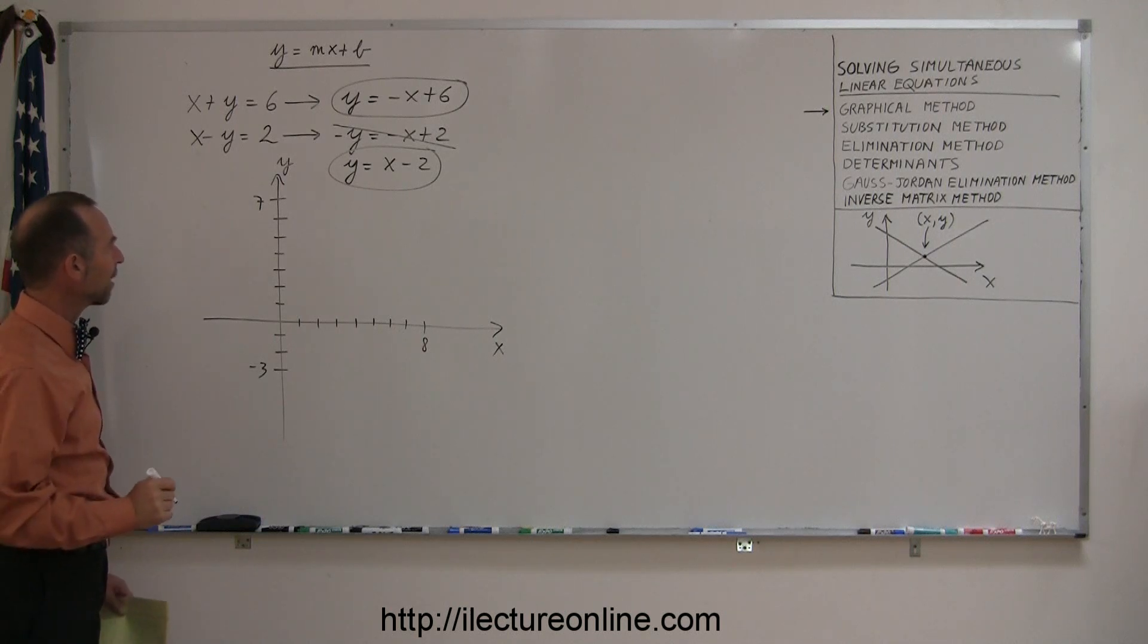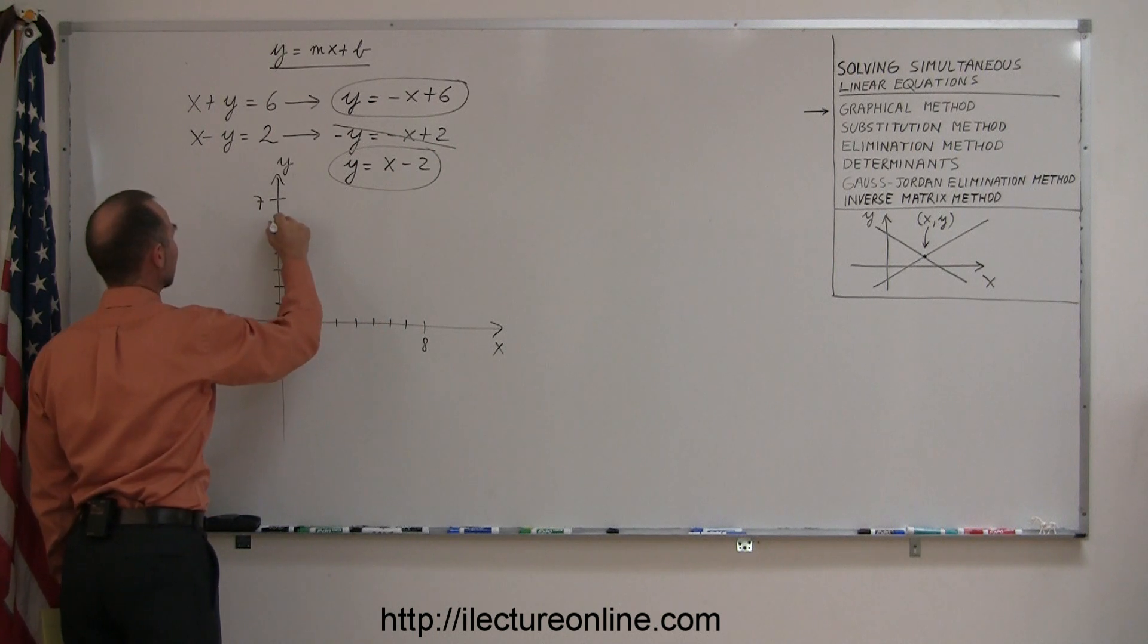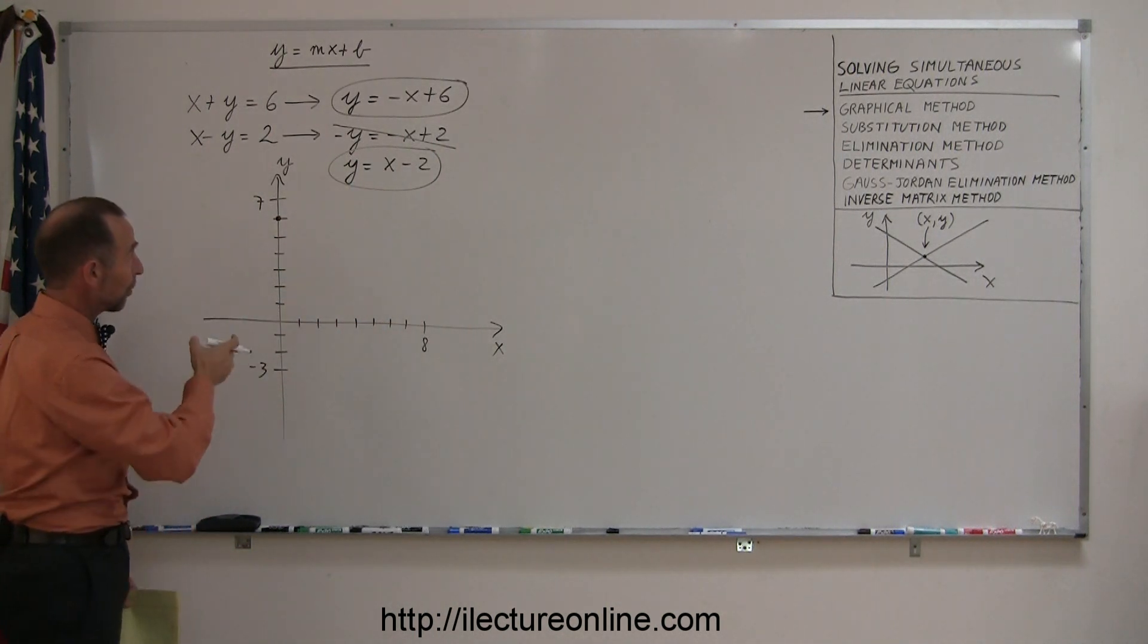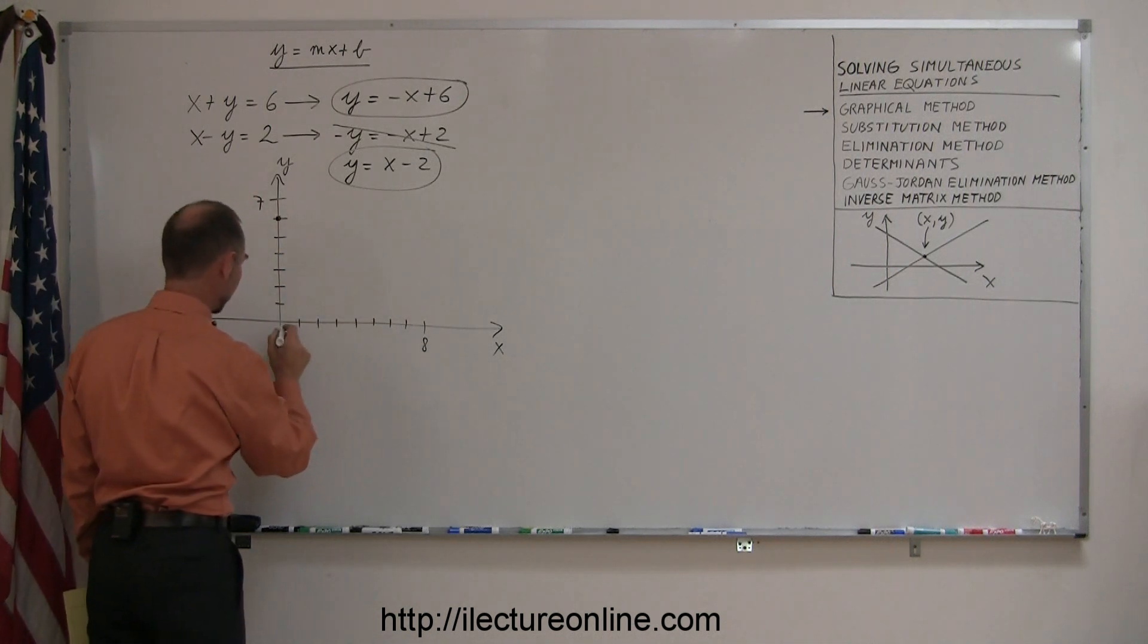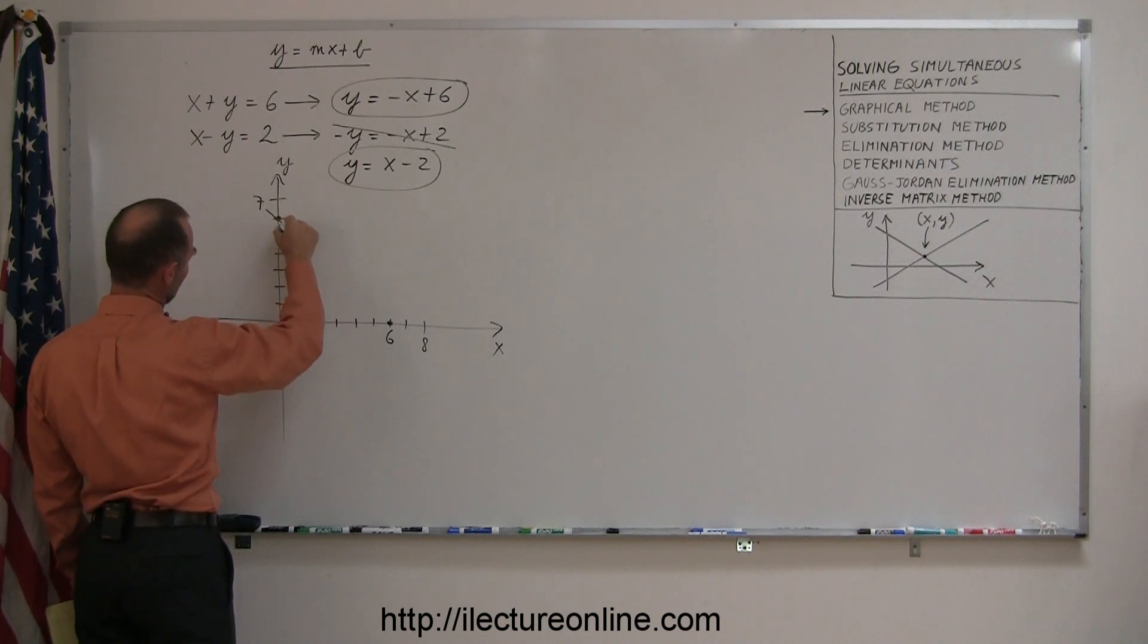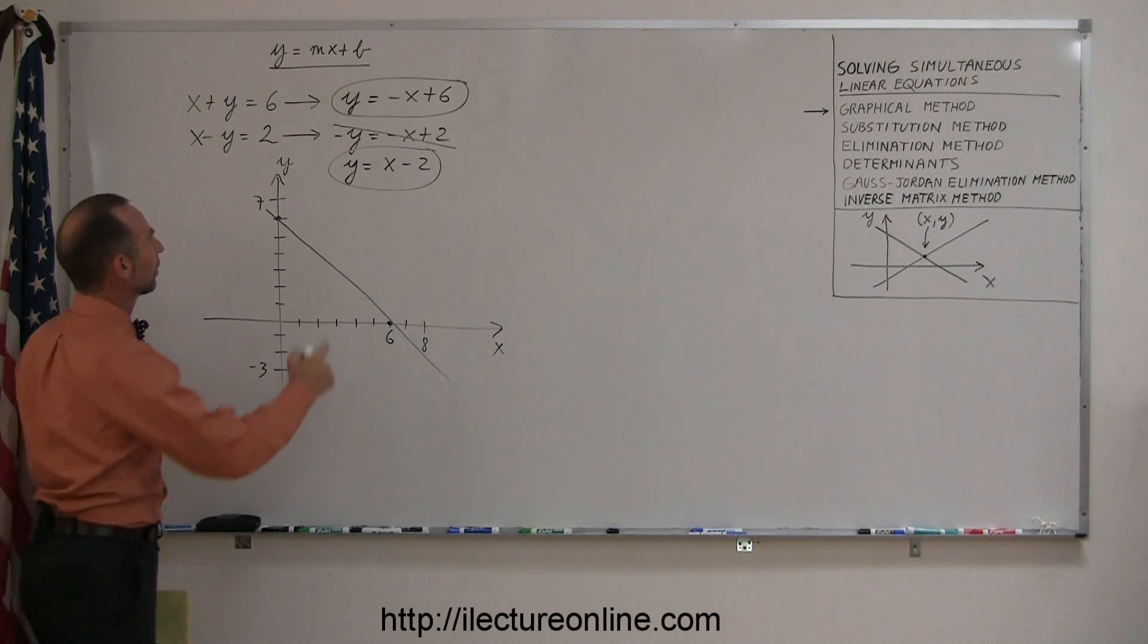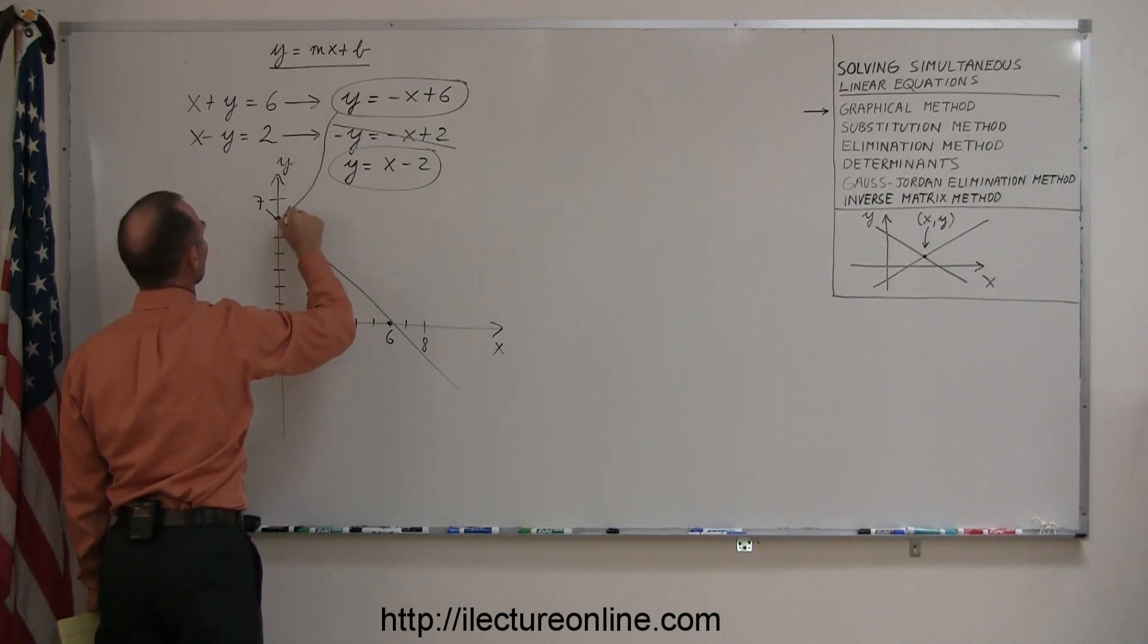And I go ahead and graph these. So the first one, my intercept is 6, which is over here, and my slope is a negative 1, which means I drop 1 and run 1, drop 1 run 1, or drop 6 and run 6. So 1, 2, 3, 4, 5, 6, that's right there, so that means the line comes from this point to this point, if I connect the two points like so. This is the linear representation or the line representation of this equation.